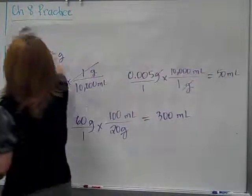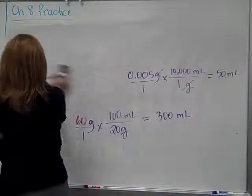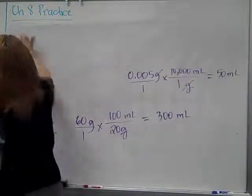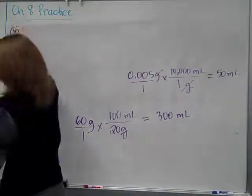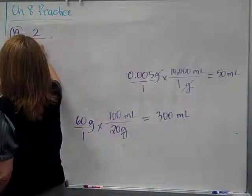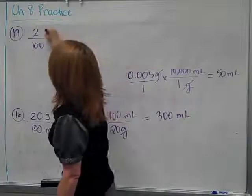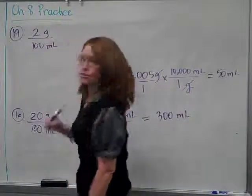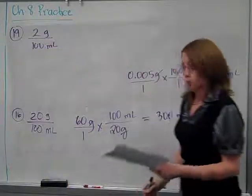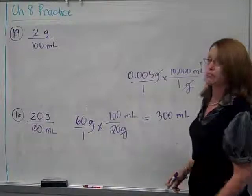Because when I work out the strength from 19, and I have a 2% solution, 2% is 2 over 100, it's dry, which means grams over milliliters.